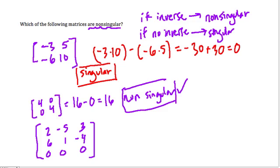When this happens, when you have a row of 0s in your matrix, then you know that there's no inverse, so it is singular.